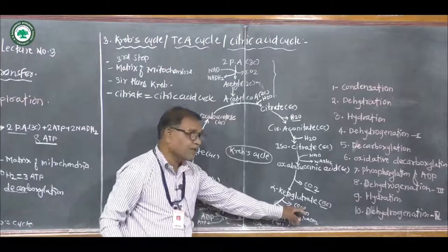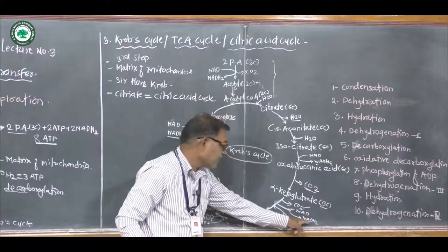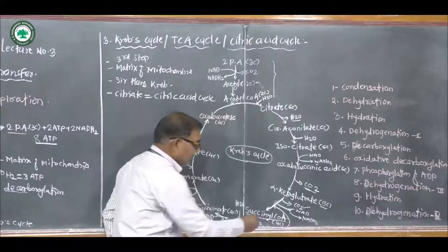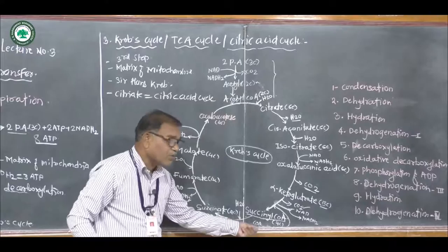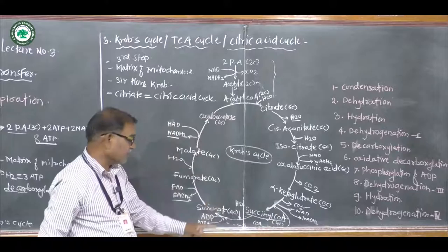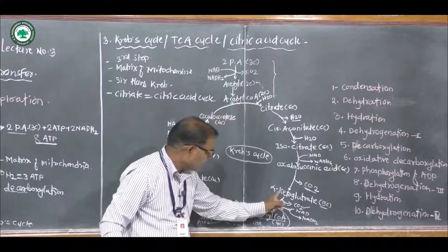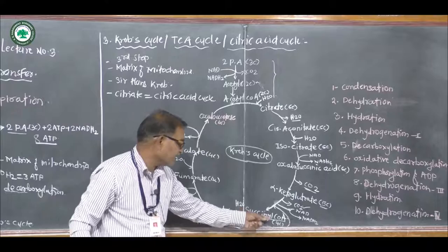Alpha-ketoglutarate is further broken down to form succinyl coenzyme A by oxidative decarboxylation — releasing carbon dioxide and a pair of hydrogen, which is accepted by NAD to form NADH2. This also involves the addition of coenzyme fractions within the matrix of mitochondria. Succinyl coenzyme A is the first four-carbon-containing compound.